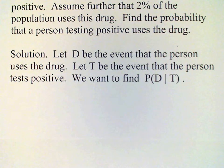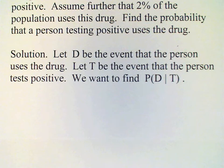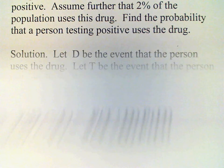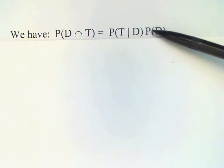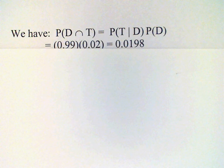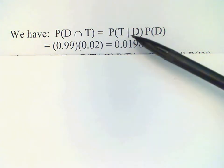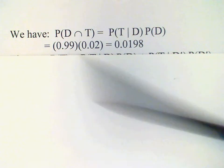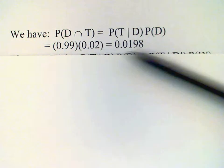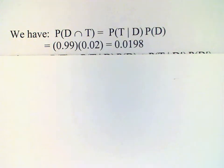From our earlier analysis, we can find the probability of the intersection of these two events simply by multiplying the conditional probability P(T|D) by the probability P(D). We set it up this way because the values of these probabilities are given in the problem. The probability that the test is positive given the person uses drugs is 99%, and the probability that the person uses the drug is 2%. Multiplying those together gives us 0.0198.